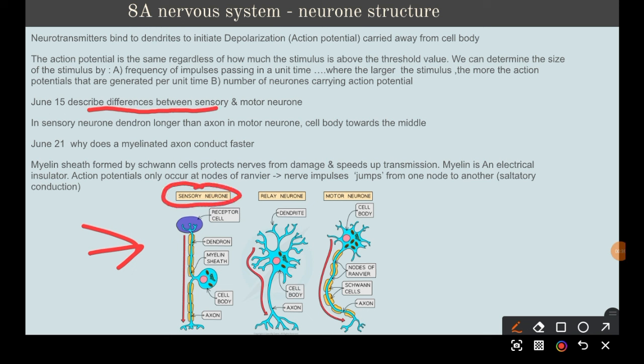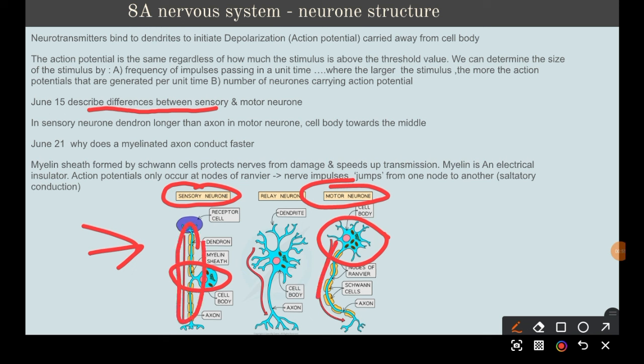In the sensory neuron, the cell body is towards the middle, while in the motor neuron it's towards the beginning. The motor neuron has a longer dendron than the axon. The nerve fiber in the sensory neuron is called a dendron, while in a motor neuron it's called an axon.